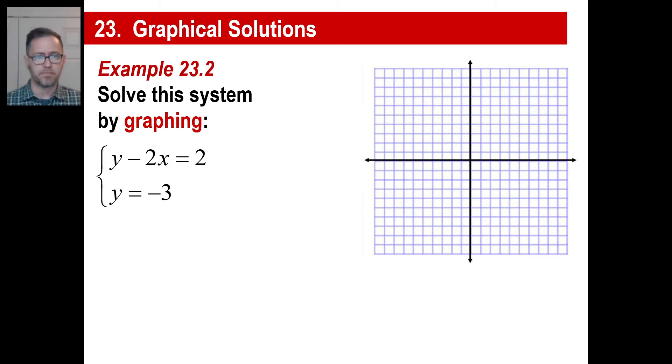So, okay, let's try this one. This is kind of weird. Look at the second equation. y equals negative 3. Well, we know what that is, right? This is the y-axis. That's the x-axis. Here's y equals negative 3, just like this, right? Like that. Okay. Well, y minus 2x equals 2. Let's fix that up. Move the 2x over. y equals 2x plus 2.